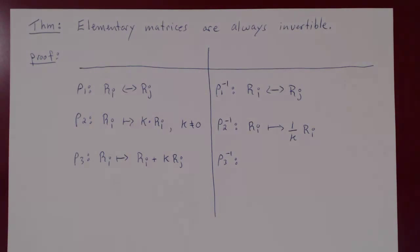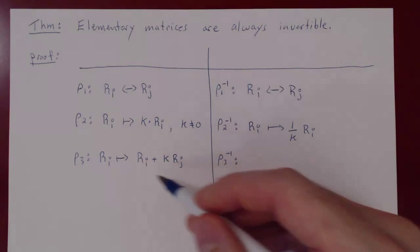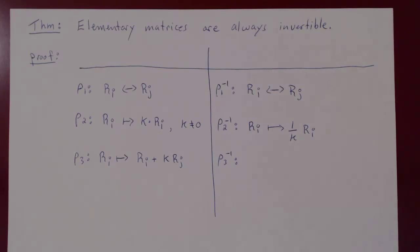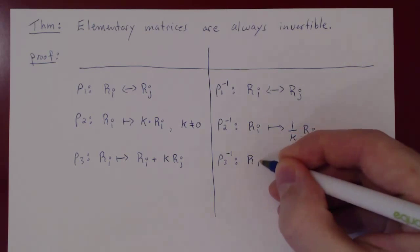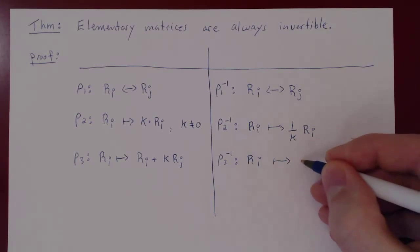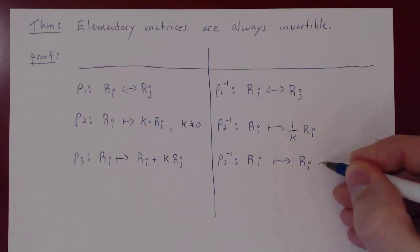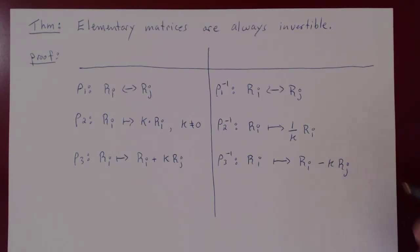Well, again, it's quite simple. You've added to row i k row j. Well, take it away, subtract it, and you're back to the original row. So take row i and now subtract from row i the same amount k row j, and you've just undone this operation.